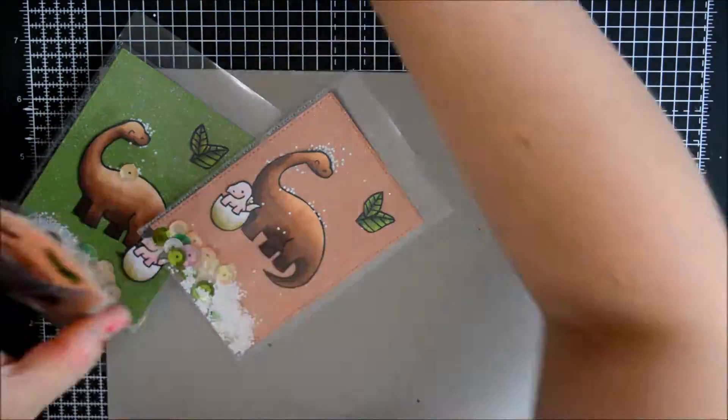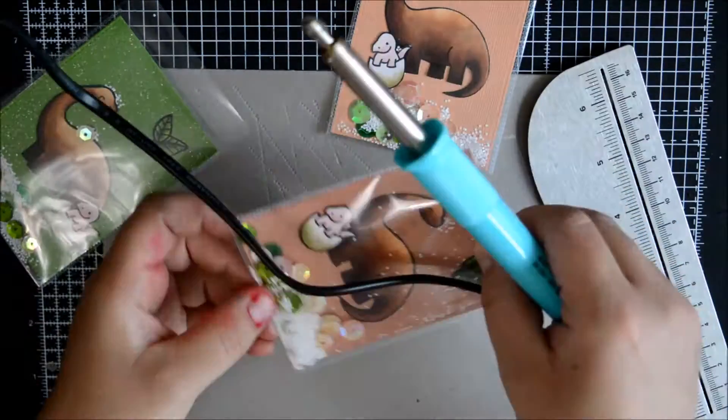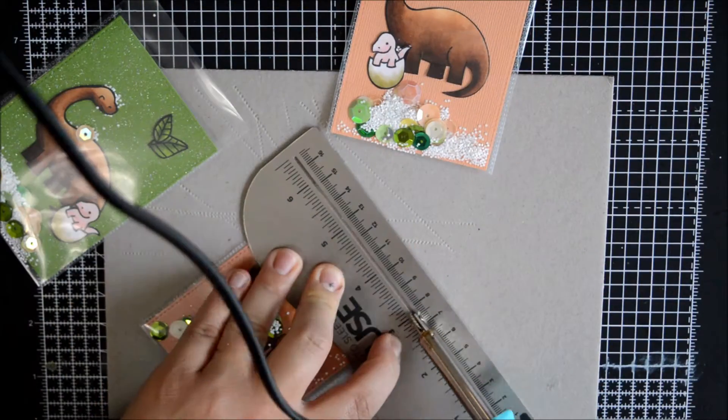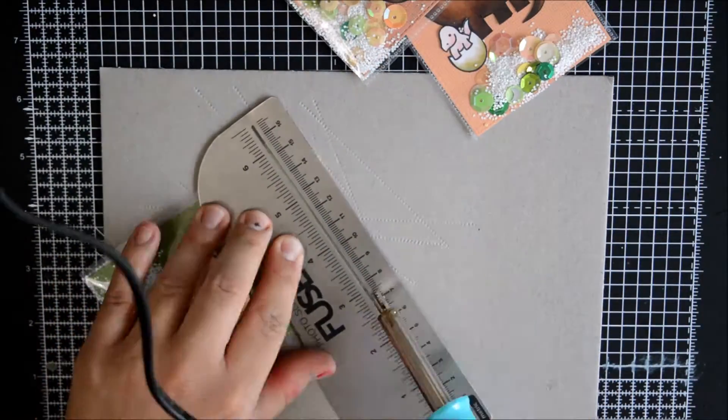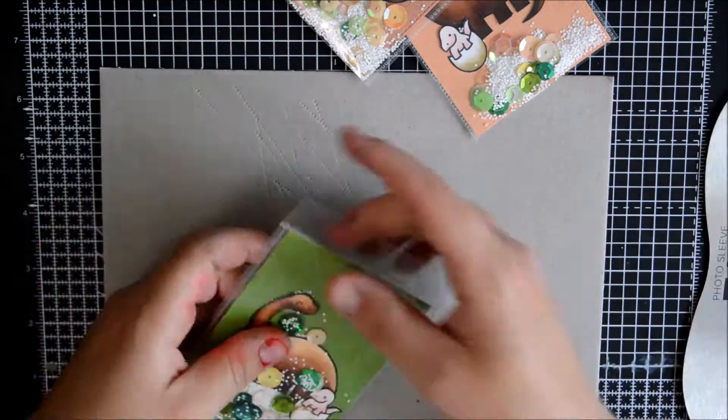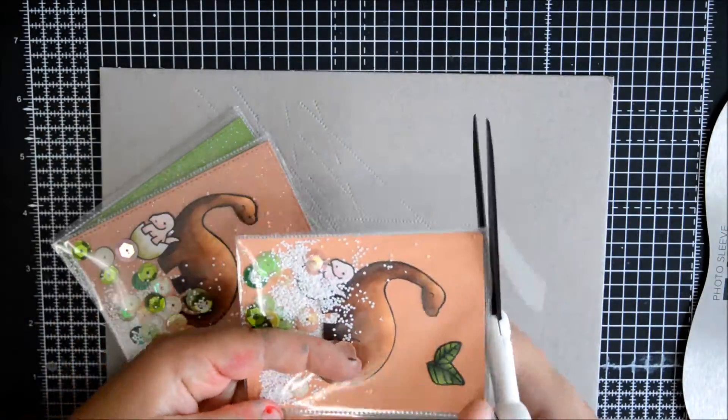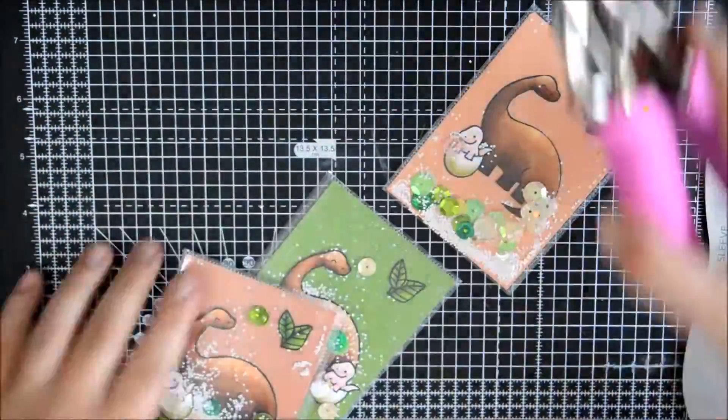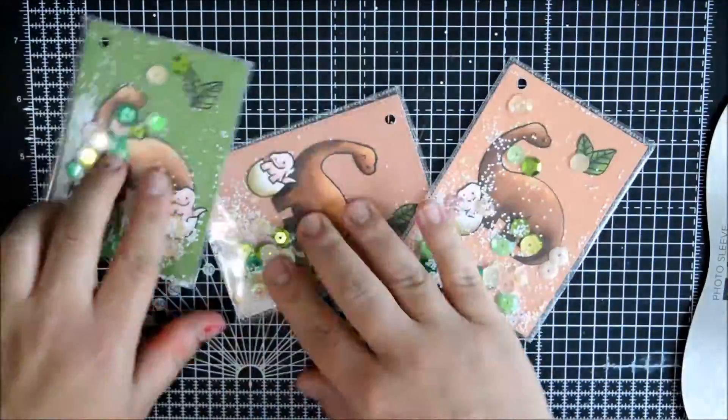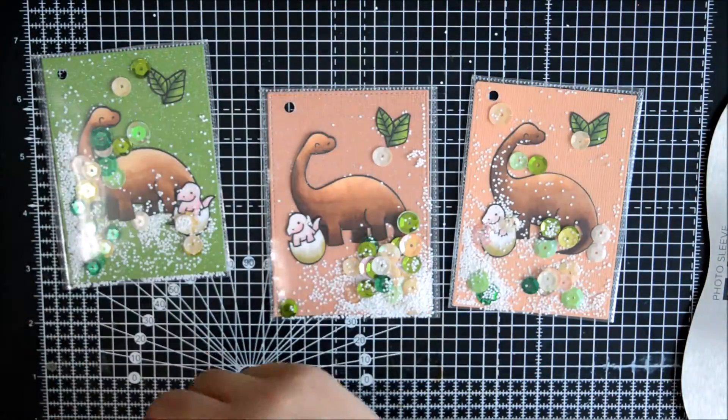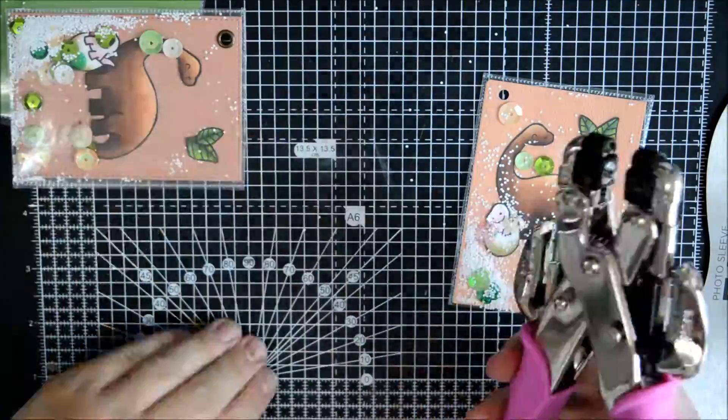So I put all my little sequin elements in all my little pockets. I let the Fuse Tool heat up for like 20 minutes. I'm not saying you have to let it heat up for that long, but that's what I ended up doing. I thought I'm going to plug it in now, I was doing something else, and then I started doing the cards. I think it's a good thing to let it heat up for a while, because if it's not hot enough, then it's going to ruin your plastic sleeves and you're wasting your time and your materials.